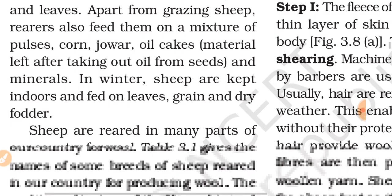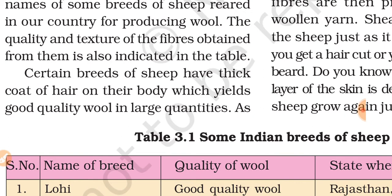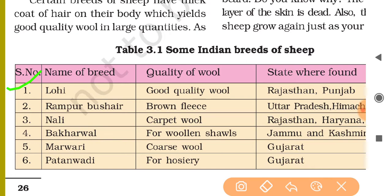In winter, sheep are kept indoors and fed on leaves, green and dry fodder. Sheep are reared in many parts of our country for wool. Table 3.1 gives the names of some breeds of sheep reared in our country for producing wool; the quality and texture of the fibers obtained from them is also indicated. Certain breeds of sheep have thick coats of hair that yield good quality wool in large quantities. Some Indian breeds are: Lohi, Rampur Bushair, Nali, Bakharwal, Marwadi, and Patanwadi.